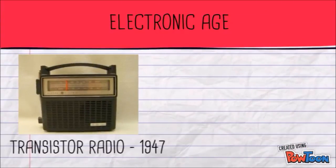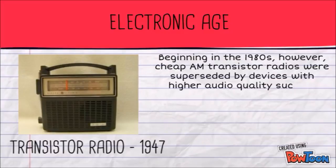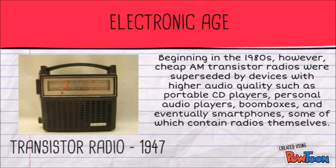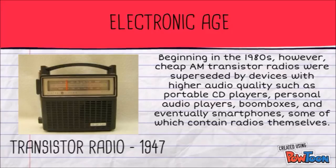The transistor radio is a small portable radio receiver that uses transistor-based circuitry. Following development in 1954 — made possible by the invention of the transistor in 1947 — they became the most popular electronic communication device in history, with billions manufactured during the 1960s and 1970s. Their pocket size sparked a change in popular music listening habits, allowing people to listen to music anywhere they went.